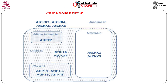Regarding the location of cytokinin enzymes in plant cells: the isopentyl transferases are present in the plastids, mitochondria, and cytosol. Plastids are thought to be the main site for cytokinin synthesis. Cytokinin dehydrogenases, which degrade cytokinins, are mainly localized to the apoplast, vacuoles, and cytoplasm. Hence, cytokinin synthesis and metabolism occurs in multiple cellular compartments.